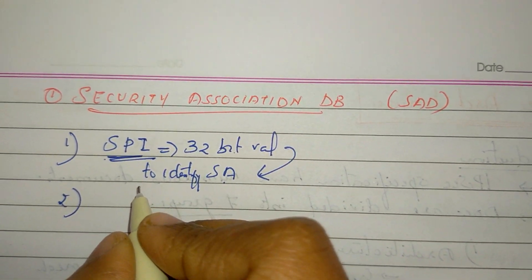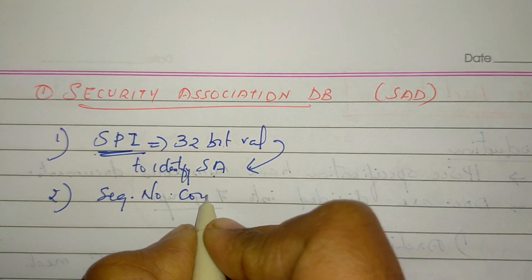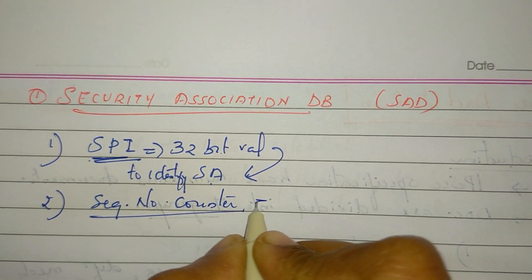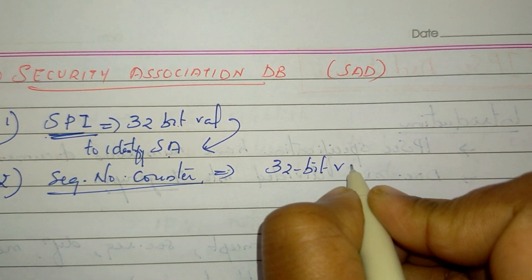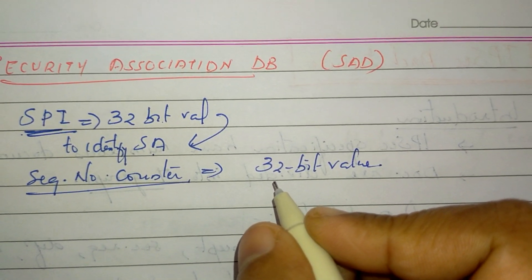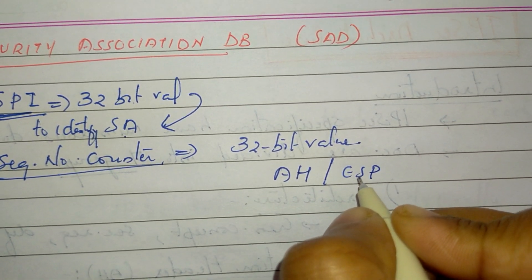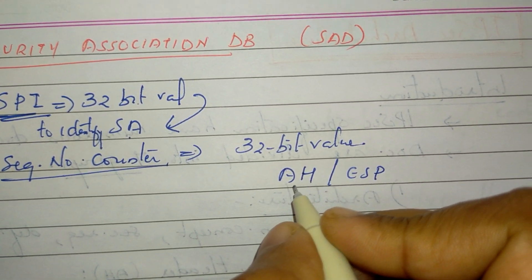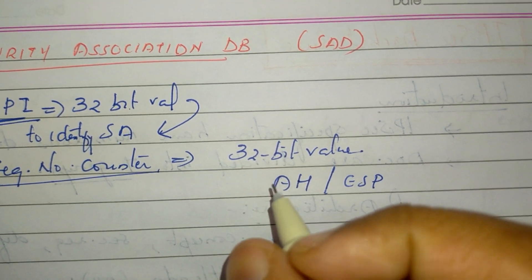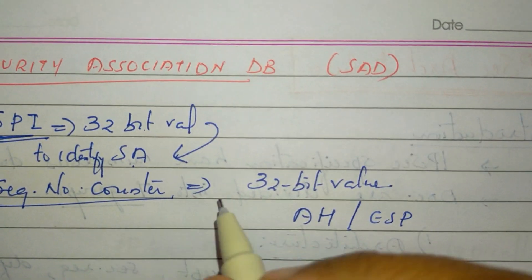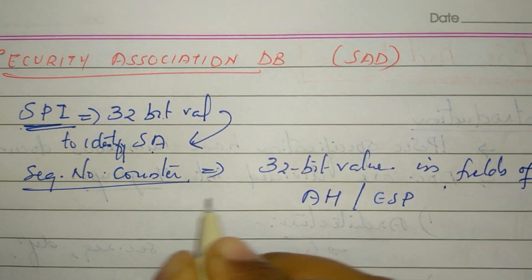The second parameter is the Sequence Number Counter — a 32-bit value used in the Authentication Header and ESP field to generate sequence numbers.